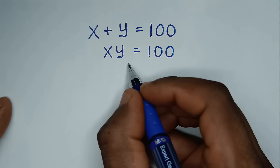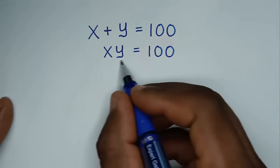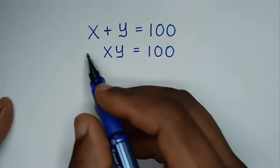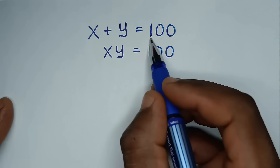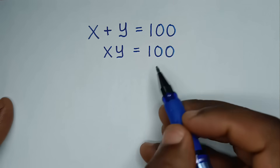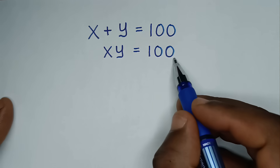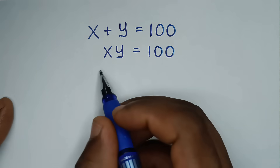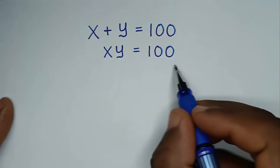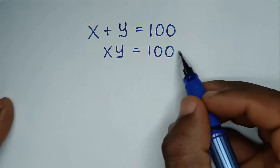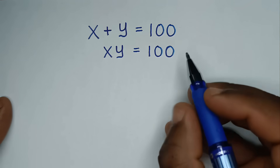Hello, you are welcome to solve this math problem, which is x plus y is equal to 100, and x times y is equal to 100, to find the values of x and y from these two systems of equations.